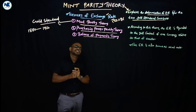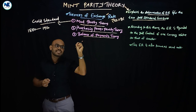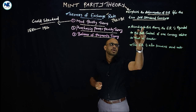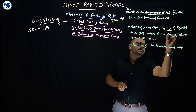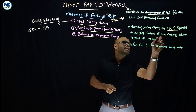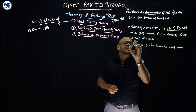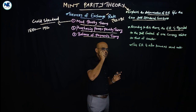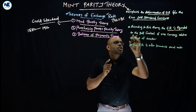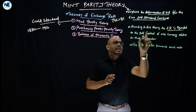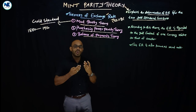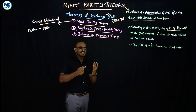According to Mint Parity Theory, the exchange rate is equivalent or equal to the gold content of one currency relative to that of another currency. This is the crux and the keyword. Exchange rate equals the gold content of one currency relative to that of another. Let's take a simple example with two nations — USA and India.